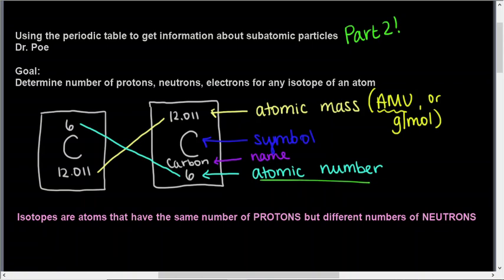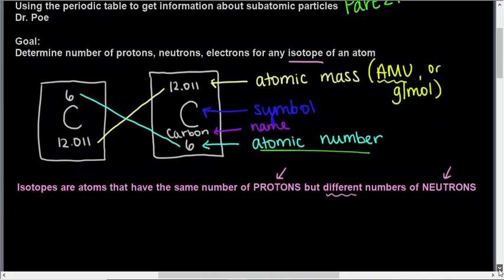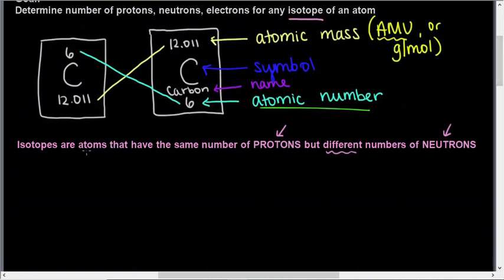So what an isotope is - for any isotope, it's different than an element a little bit. Isotopes are atoms of an element that have the same number of protons, which means they're the same element, but they have different numbers of neutrons. So isotopes are the same element but weigh different amounts.